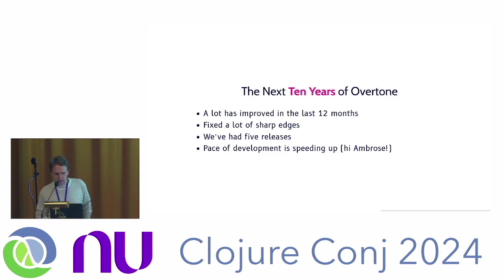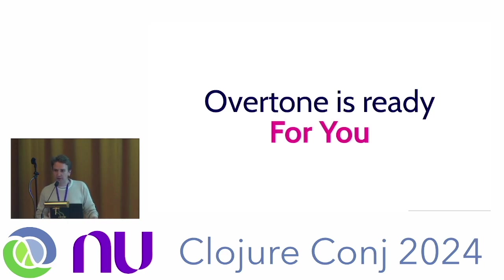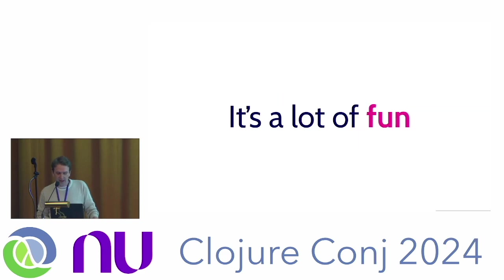So let's talk about the next 10 years of Overtone. A lot has already improved in the last 12 months. We fixed a lot of the sharp edges so that it's much easier to just get into. We've had five releases since then — the last one just this morning, which was a big one — and it's speeding up. Ambrose from Typed Clojure fame got involved, and he's doing tons of pull requests. The best is yet to come. My first big contribution this year was a pattern library, which is what I used in the demo. It's inspired by the pattern library in SuperCollider, but it's all very Clojure-y under the hood. Overtone is ready for you. We're still around, in better shape than ever, and it's easy to get started — easier than ever. And it's a lot of fun.